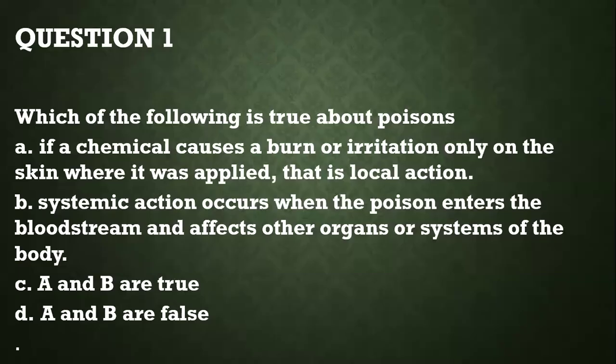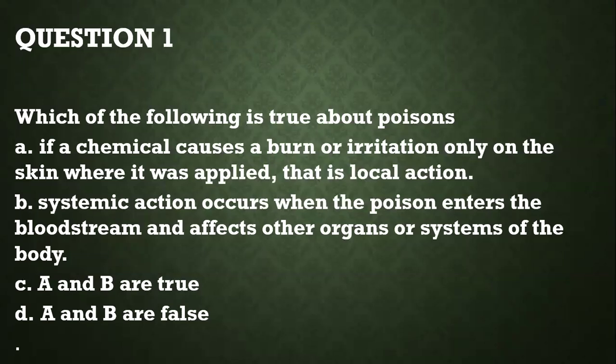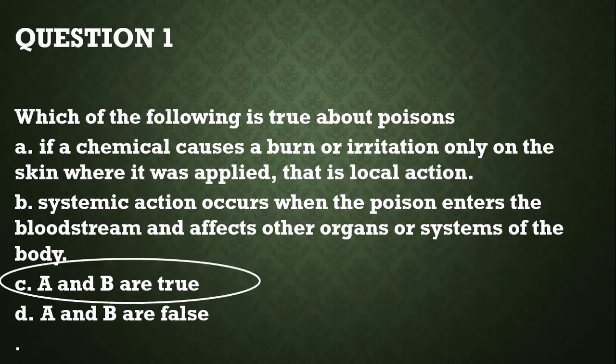Question number one: which of the following is true about poisons? A — if a chemical causes a burn or irritation only on the skin where it is applied, at the site of application, that is called local action. B — systemic action of a poison occurs when the poison enters into the bloodstream and affects all the organs or systems of the body. The correct answer is A and B are true. Poisons can act locally and they can also act systemically.